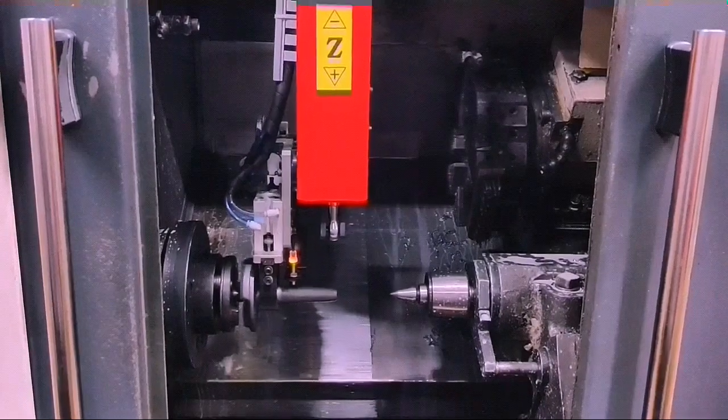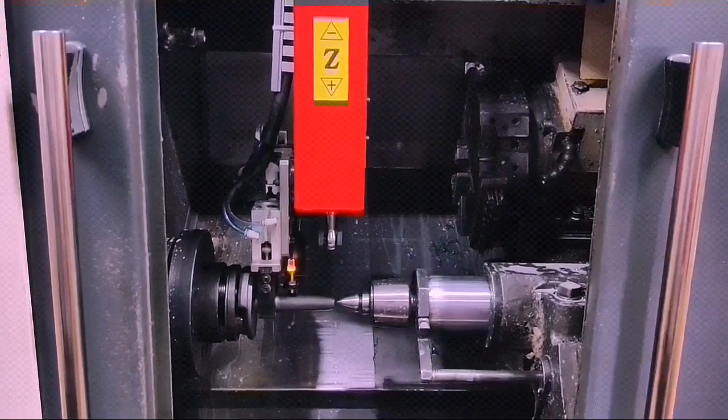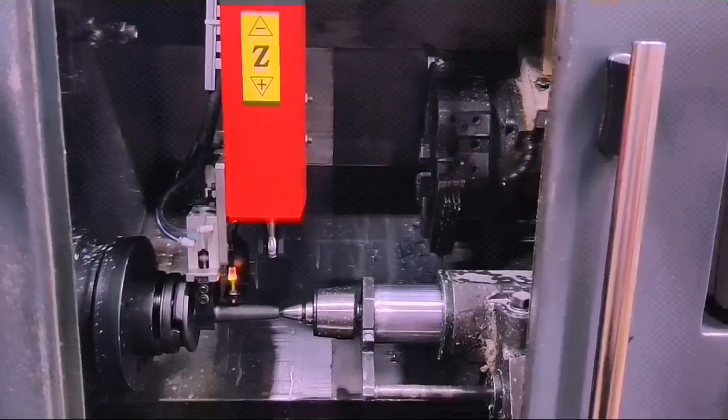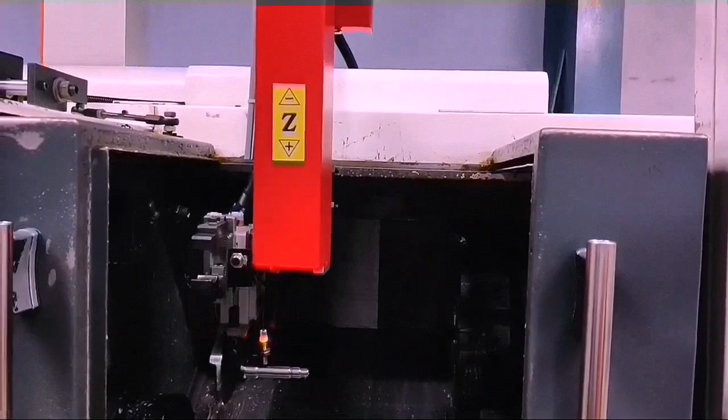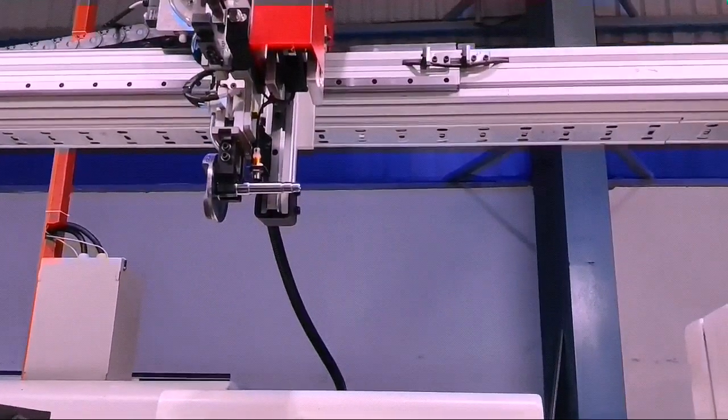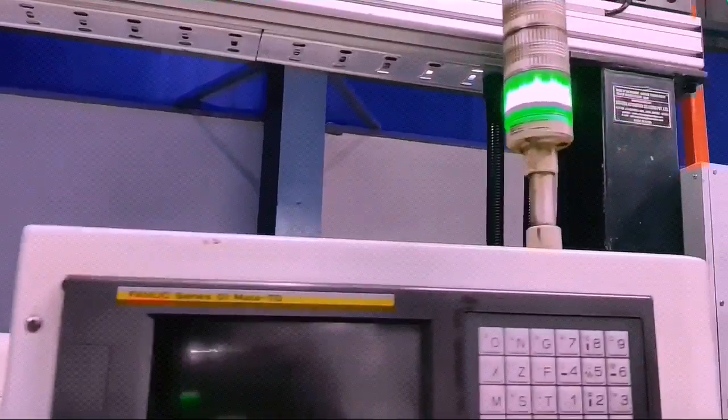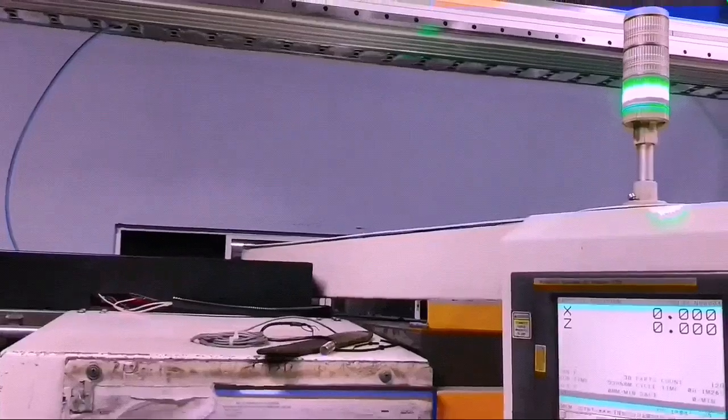The advantage of having two trays is that the robot and machines are never idle for component loading and unloading. While the robot is picking components from tray 1 and keeping finished components on tray 1, the operator is loading raw components in tray 2.